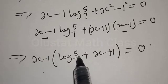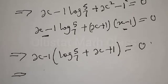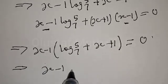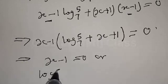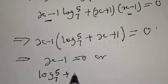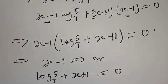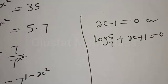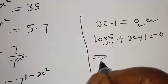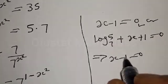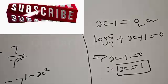So either log 5 base 7 plus x plus 1 is equal to zero, or x minus 1 equal to zero. From x minus 1 equal to zero, this implies that x minus 1 equals zero, therefore x is equal to 1. That is one of the values of x.